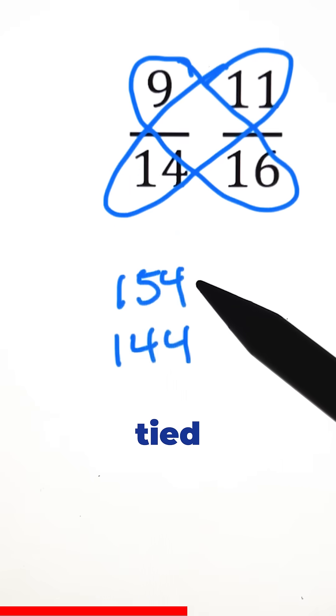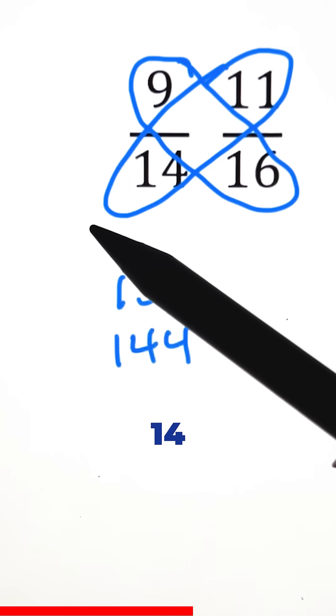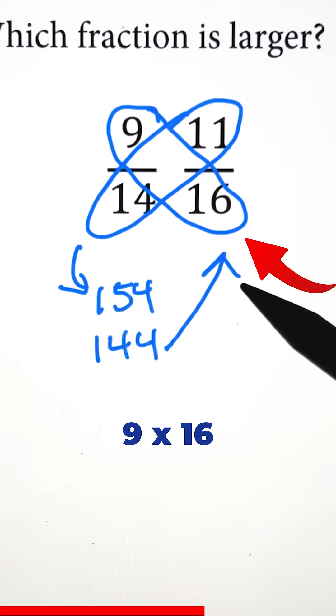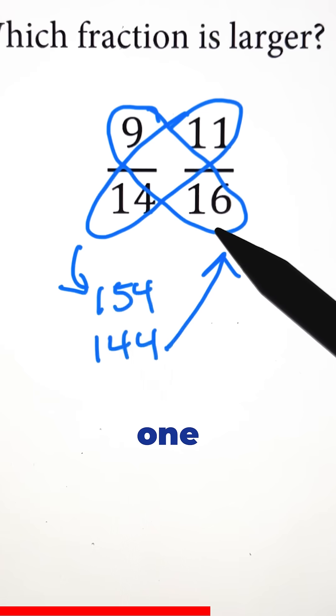154 is tied with the multiplication of 14 times 11, and 144 is tied with the multiplication of 9 times 16. But for each of these, we're going to look at the numbers on the top.